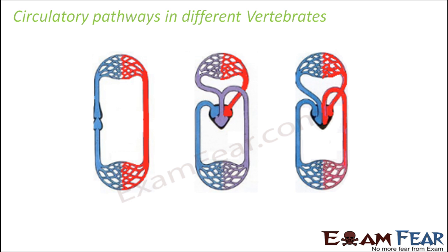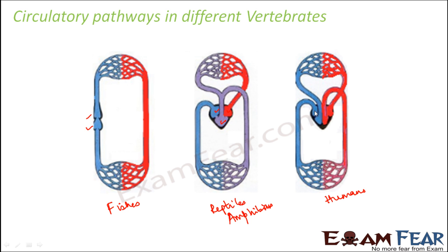We started with fishes, reptiles, and human beings. Fishes have a two-chambered heart. Reptiles and amphibians — except crocodiles — have a three-chambered heart: one, two, three. And human beings have a four-chambered heart: one, two, three, four. In all these different animals, they have different ways of circulation.